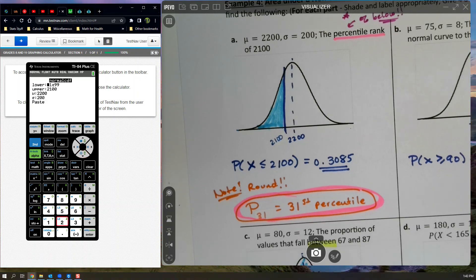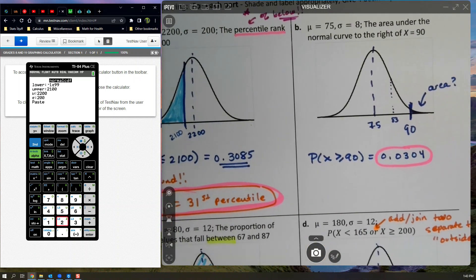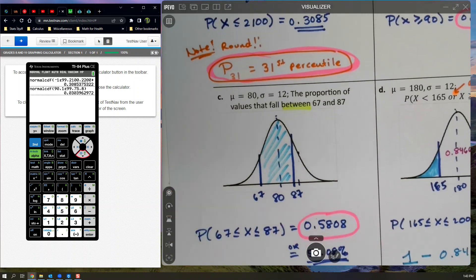So then the next one, normal CDF. This one starts at 90, goes to forever. So I have to hit one second comma 99. My mean is 75. My standard deviation is 8. There it is. Paste it.